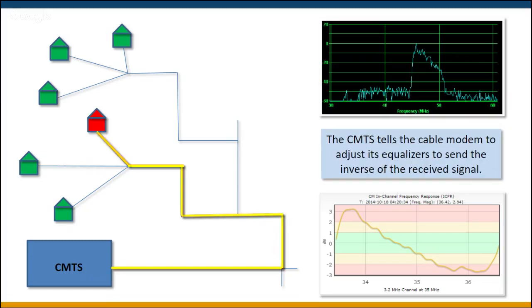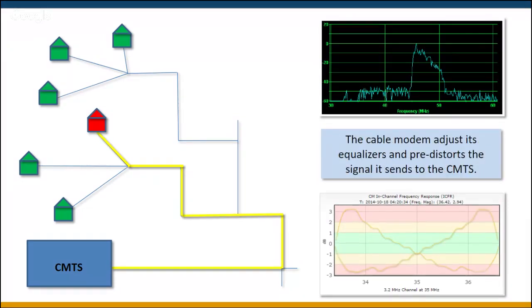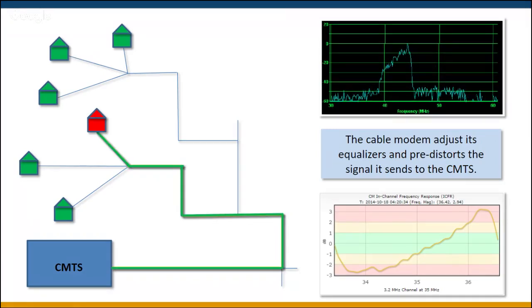All right. So again, the CMTS then, as you could tell that the yellow represents a communication message that it sends back to the modem saying, please make some adjustments such that on the next transmission back to the head end, that signal will have these adjustments taking place. All right. So what we're seeing here is now the modem, the child in this relationship, is obedient to the parent, makes its equalizer adjustments, and sends essentially what is the inverse of the last message that the CMTS received.